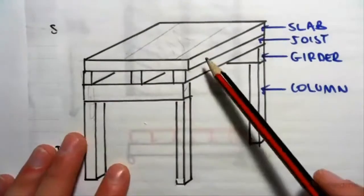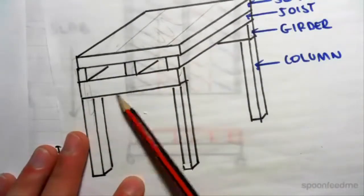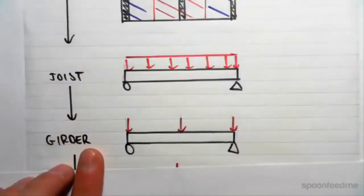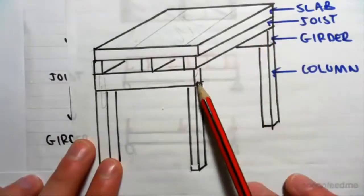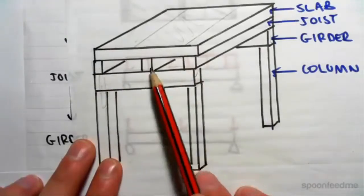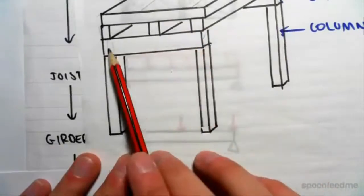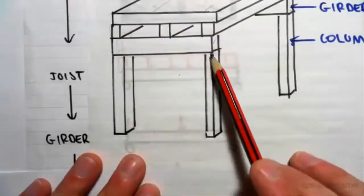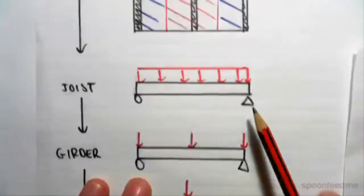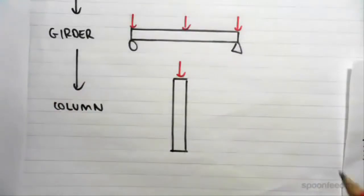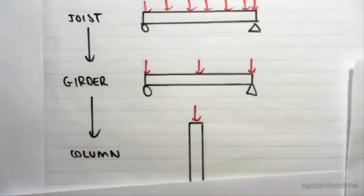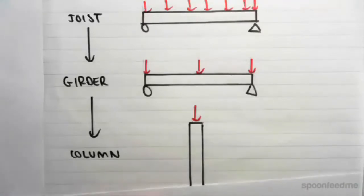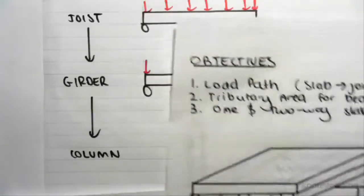Those joists are then supported by girders. Looking at the girders, we get three point loads from those joists — the joist UDLs produce reactions on either side, so we have point load, point load, point load hitting the girder. From all those point loads on the girder, we can then work out the point loads in the columns. So the load path is: slabs to joists, joists to girders, then to columns — with area loads converting to UDLs converting to point loads.